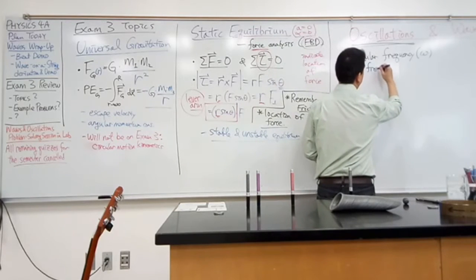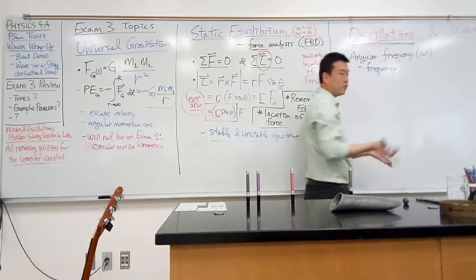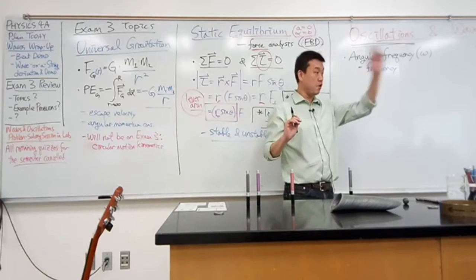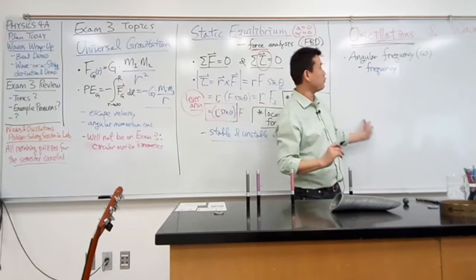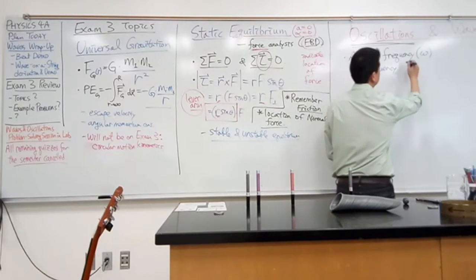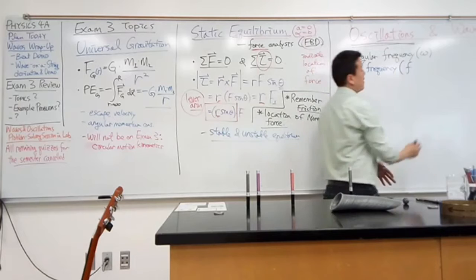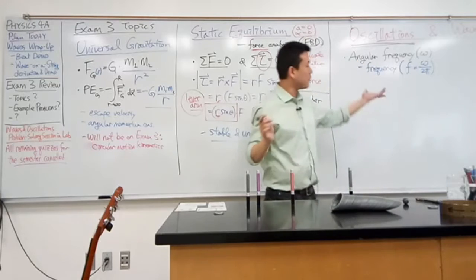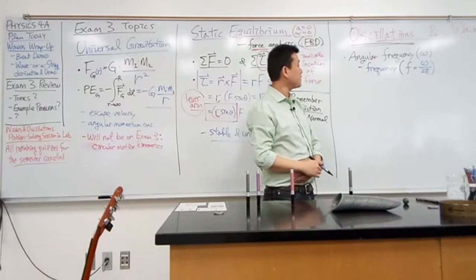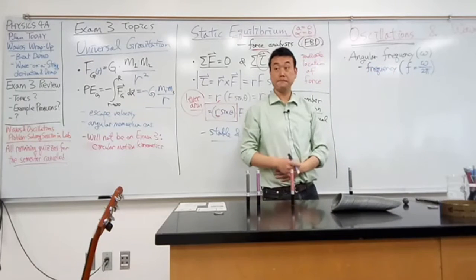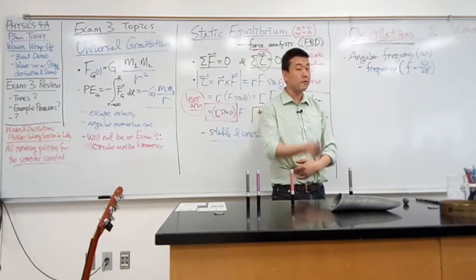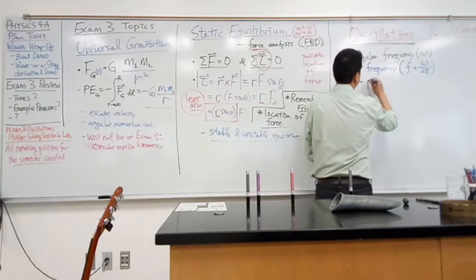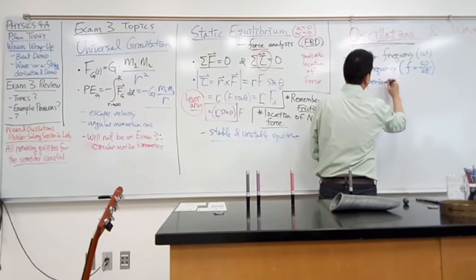Frequency is related to angular frequency, and you should remember all these relationships, because the question might give you information in any of these related quantities and you'll have to work it back. Frequency, usually letter F, is equal to angular frequency divided by 2π — or angular frequency is frequency times 2π. What else is related? Period — yes, period. We define period in connection with angular frequency and frequency.